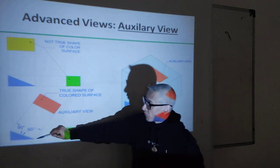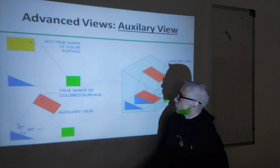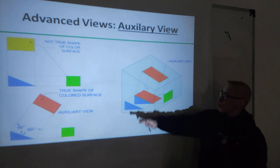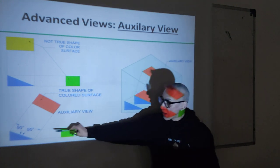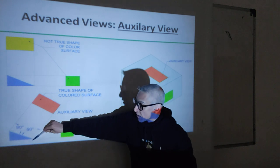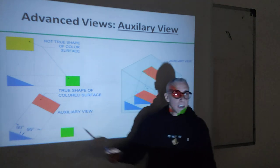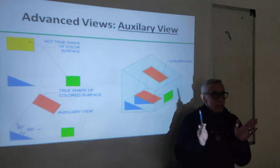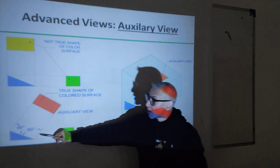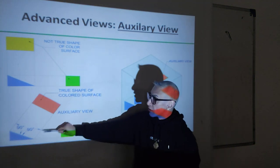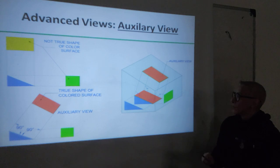Here is another example. We have, for example, a triangular shape. If you draw it from the top and from the side, you see not the full line length - the measurement of the line. You don't see it fully. So an auxiliary view will show us the full measurement.